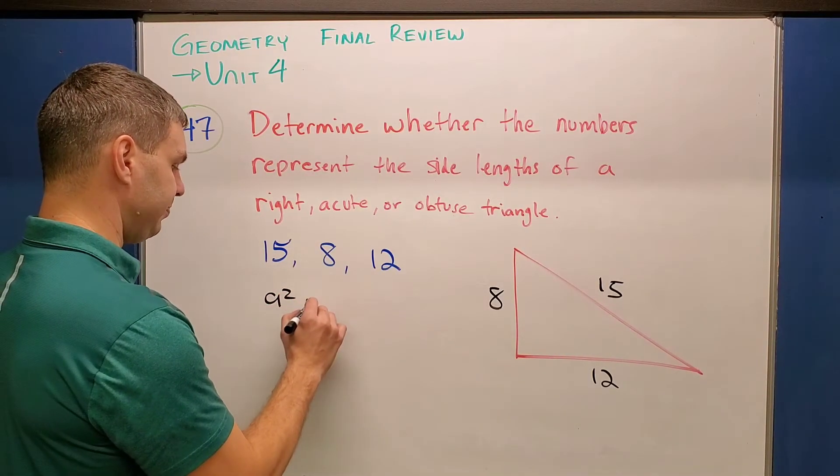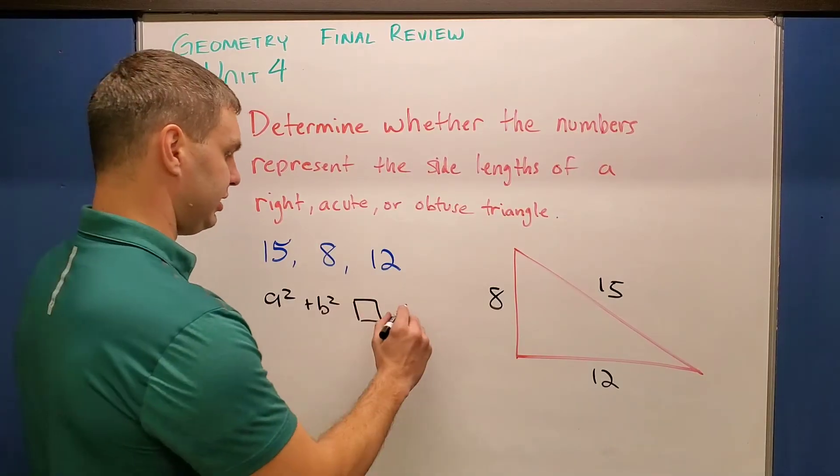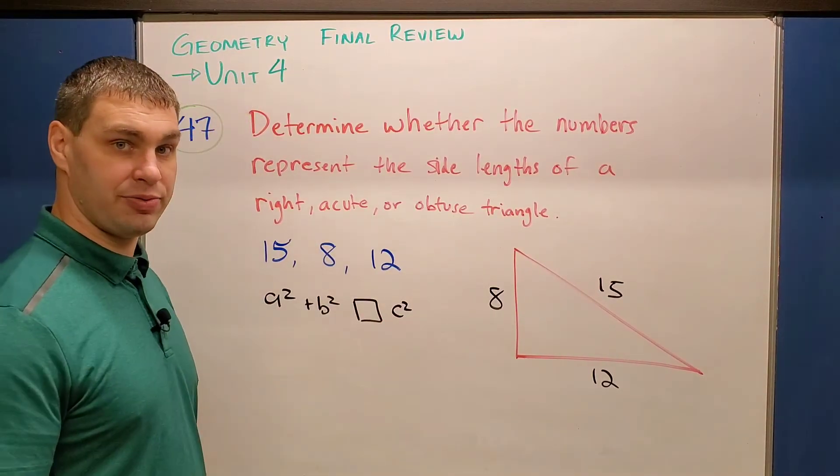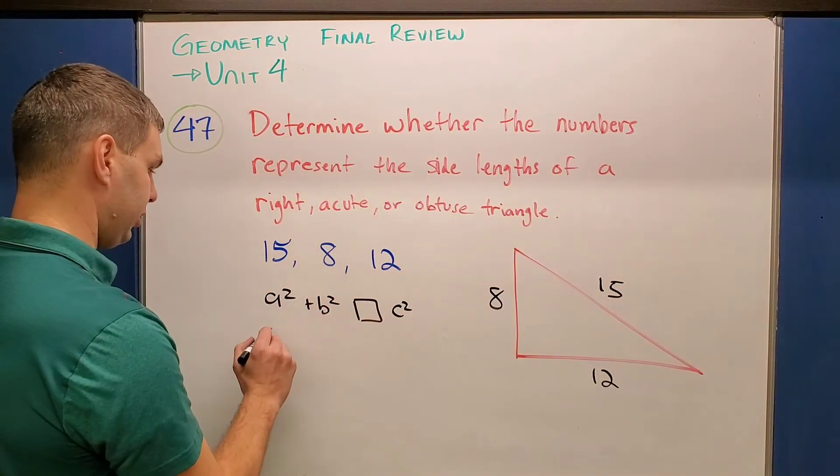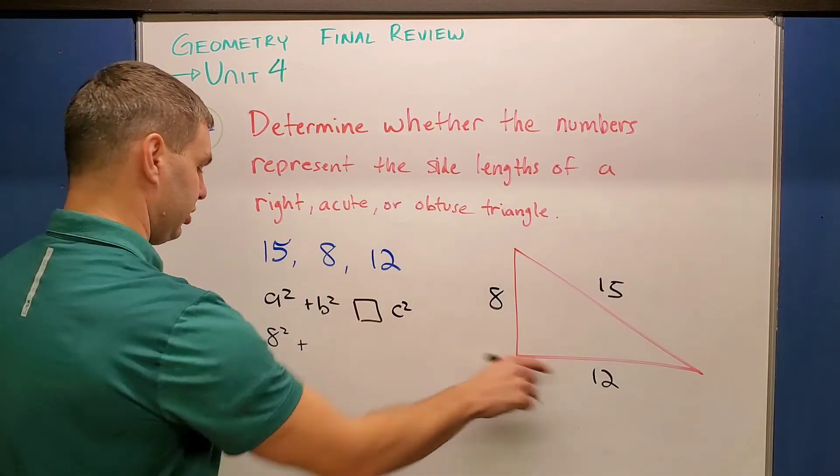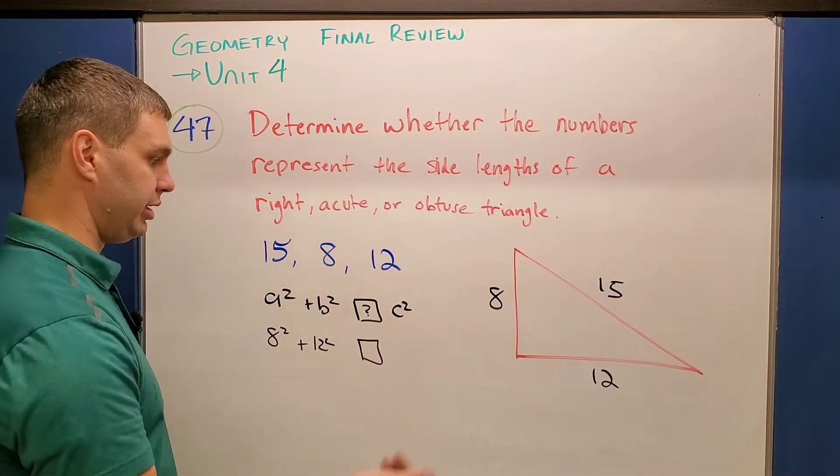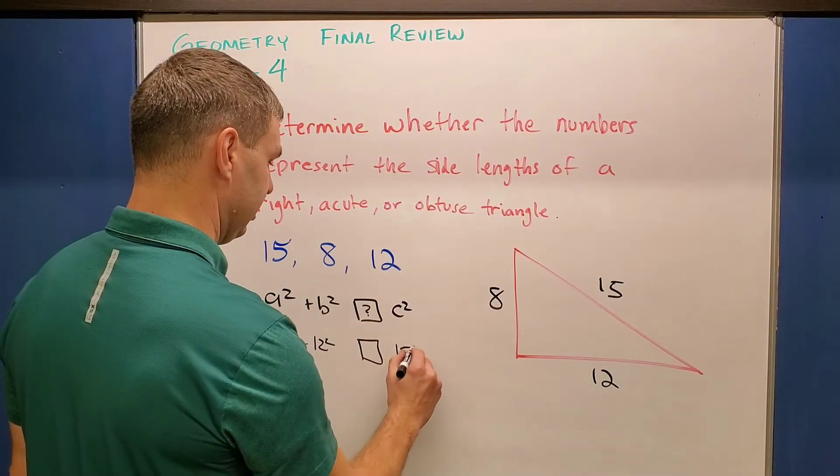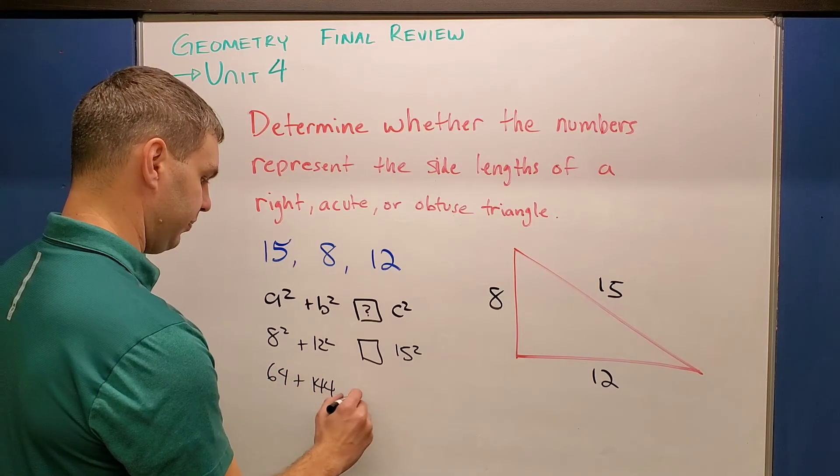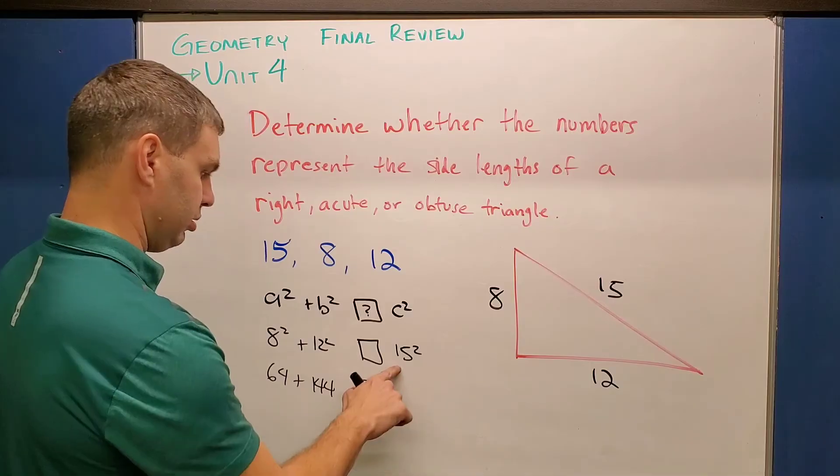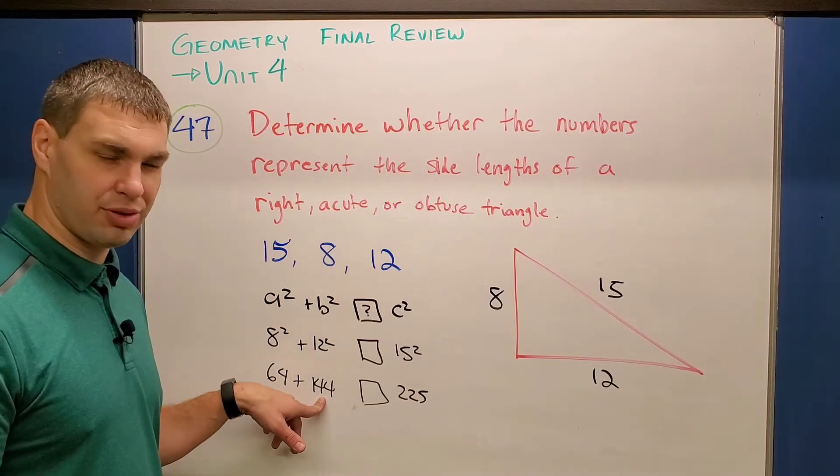We're going to still use a² + b². The only difference is I'm going to use a blank box because I don't know whether that is going to equal c² or not. However, the fact remains that my c is my longest side, in this case 15. So I'm going to fill the other two in. a² I'll say is 8², b² I'll call 12². Again, I don't know what's going to go in that box, less than, equal to, or greater than, and then c² is going to be 15². So if I work out the math here, 8² is 64, 12² is 144, and 15² is 225. So let's see here, 64 plus 144 is 208.